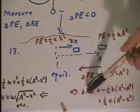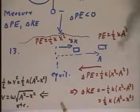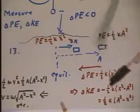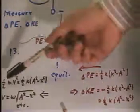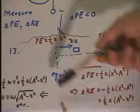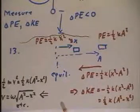Okay? So since this change in kinetic energy is equal to the kinetic energy at this point, since, again, we had zero kinetic energy here, we see that at the position x, one-half mv squared is equal to this quantity, one-half k times quantity a squared minus x squared.